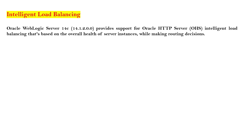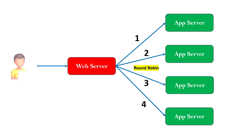Now let us understand what change has been introduced at the web server level. This is called Intelligent Load Balancing. From Oracle WebLogic Server 14.1.2 onward, it provides support for Oracle HTTP Server OHS intelligent load balancing that is based on the overall health of server instances while making routing decisions. The existing round-robin algorithm is static — it doesn't check the state or load of your backend application servers.